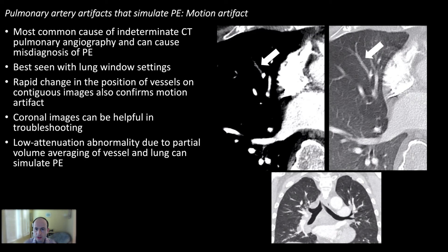Here is an example of motion artifact causing an apparent filling defect in a pulmonary artery branch. It appears somewhat well-defined on mediastinal windows, but on lung windows you can see a double appearance of that pulmonary artery — simply motion artifact. My practice is: when I see a filling defect, unless it's very well-defined, I go to lung windows to make sure there's no motion. Coronal imaging can also help since motion can occur in the cranial-caudal plane. Multi-planar reformats are very helpful.